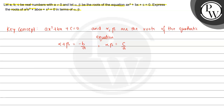That is the sum of the roots and this is the product of the roots. We can also write the equation in the form x² − (alpha + beta)x + alpha·beta = 0. This is the sum of the roots and this is the product of the roots.